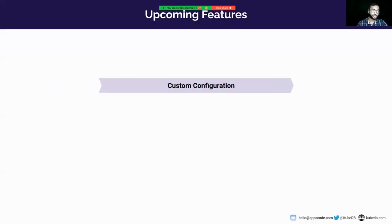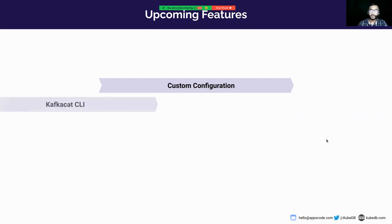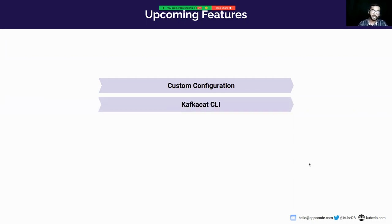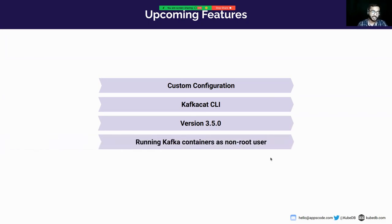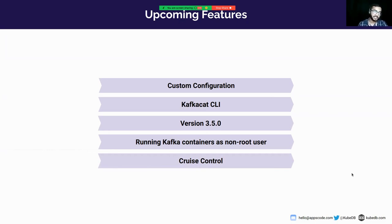Now I will talk about our upcoming features. The custom configuration I showed today is already available. Next is Kafka cat CLI — a command-line utility used to test and debug Apache Kafka. We will also add version 3.5.0, support for running Kafka containers as non-root, and Cruise Control — an open source system for optimizing Kafka clusters by monitoring cluster load and rebalancing the cluster automatically.